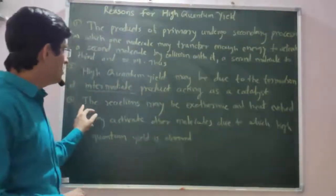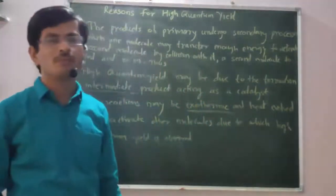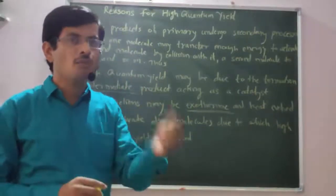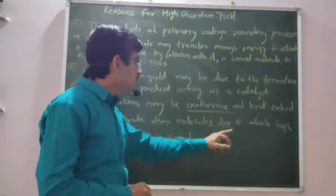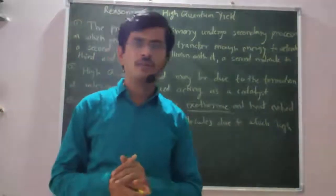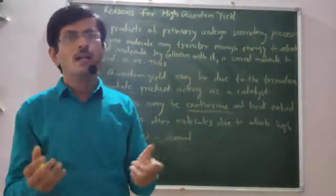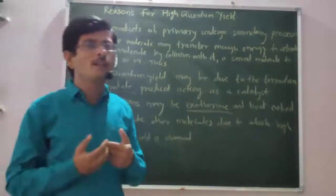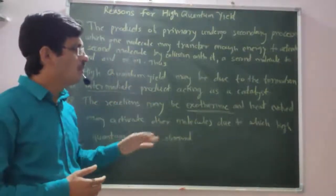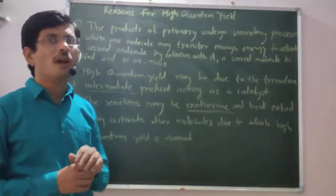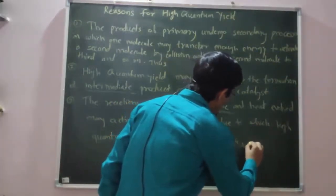The third reason: the reactions may be exothermic. Due to the exothermic reaction, heat is evolved. The heat evolved may activate other molecules, due to which high quantum yield is observed. For example, the reaction between hydrogen and halogen gives a quantum yield of about 10 raised to 4 to 10 raised to 6.